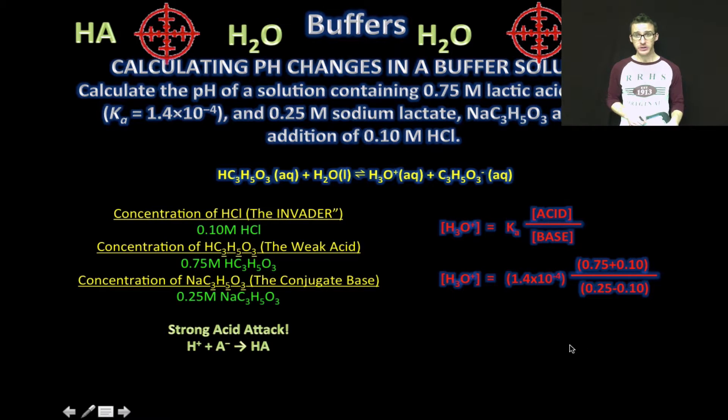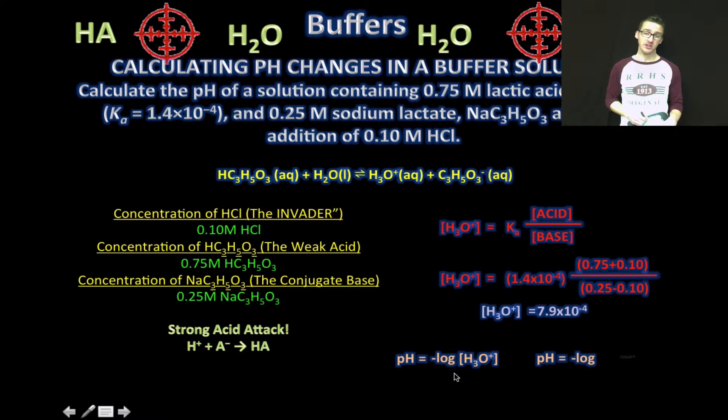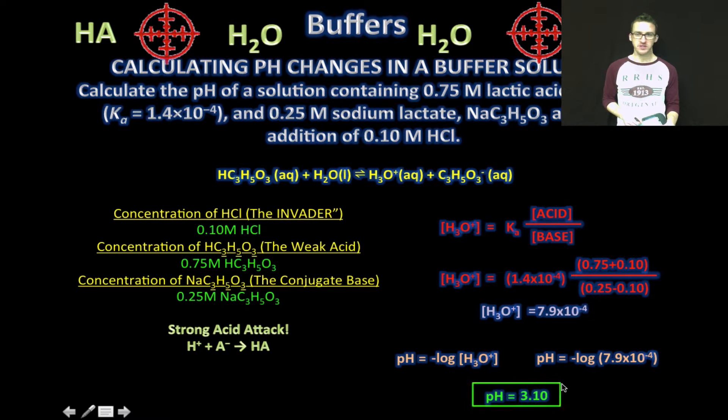And then it's just calculator time. So the hydronium ion concentration is equal to 7.9 times 10 to the minus 4 molar. And then to determine pH, we're just going to throw it into the pH equation, which is equal to the negative log of our hydronium ion concentration. So the pH of this buffer system after we have added the HCl is 3.10.